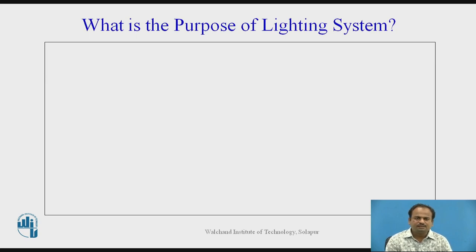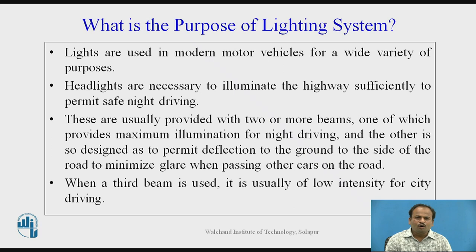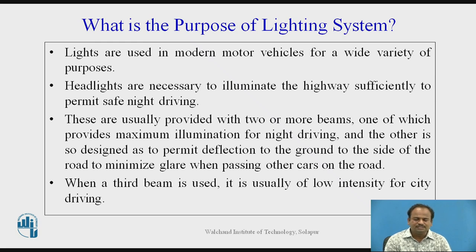Dear students, please think: what is the purpose of the lighting system in an automobile? Lights are used in modern motor vehicles for a wide variety of purposes. Headlights are necessary to illuminate the highways sufficiently to permit safe night driving. These are usually provided with two or more beams — one of which provides maximum illumination for night driving, and the other is designed to deflect light to the ground and side of the road to minimize glare when passing other cars. When a third beam is used, it is usually of low intensity for city driving.